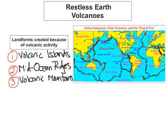For your Junior Certificate examination you need to know what these three landforms are: volcanic islands, mid-ocean ridges, and volcanic mountains.